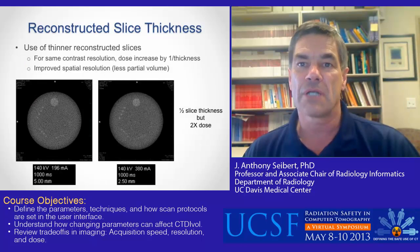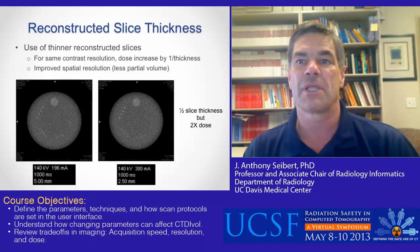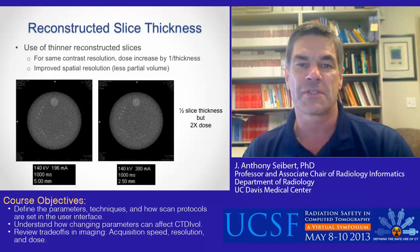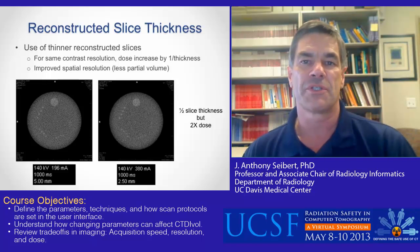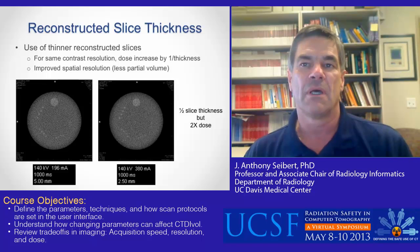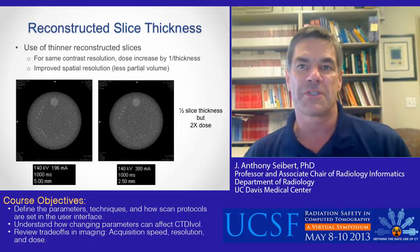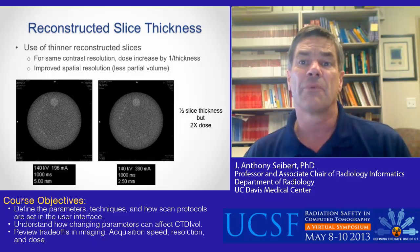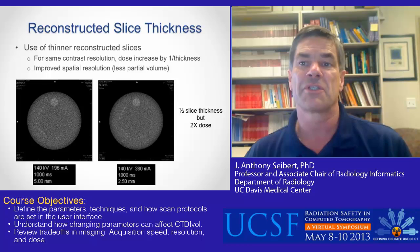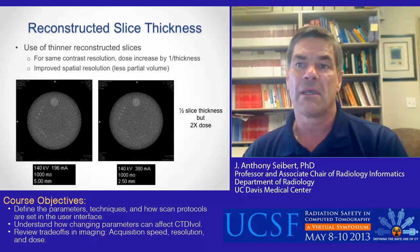A low contrast phantom demonstrates the relationship of the impact of using thinner slices while keeping the contrast-to-noise equal. On the left is a scan with 5 mm slice thickness using 196 MA. On the right is a scan with 2.5 mm slice thickness using 300 MA, with twice the dose.